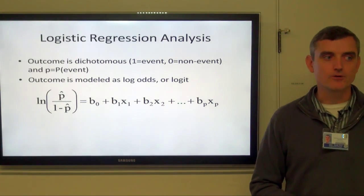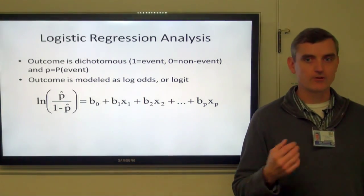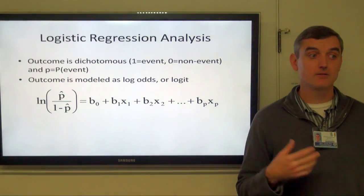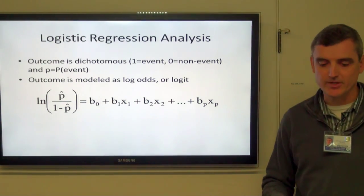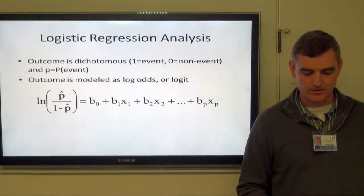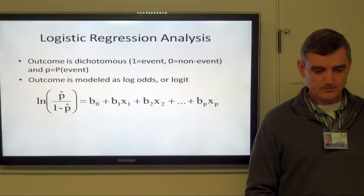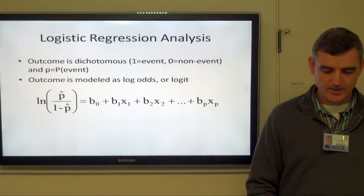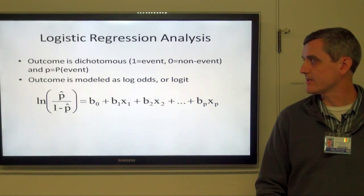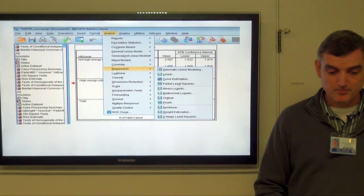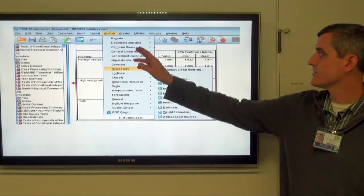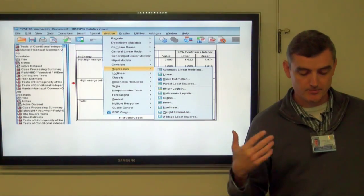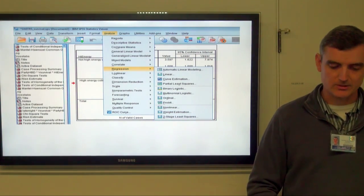That's fine if we've got only two variables, but if we have multiple variables, logistic regression is probably a better tool because you can address all of them at once. Logistic regression is where the outcome is dichotomous and we're looking at the log odds. In SPSS, go to Analyze, Regression, and choose binary logistic because we have two possible outcomes.